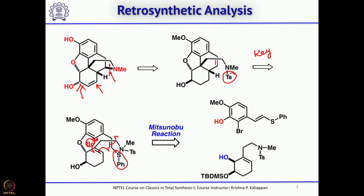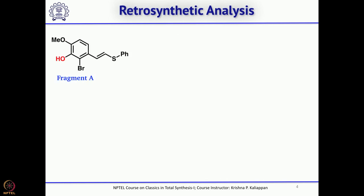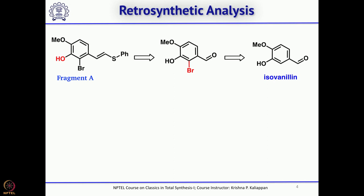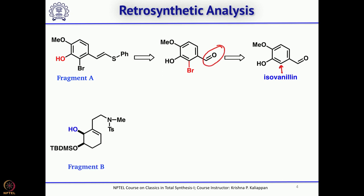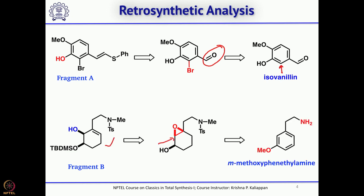This tetracyclic core can be obtained by a simple Mitsunobu reaction on this alcohol, where the corresponding phenol is the nucleophile. Fragment A can be obtained from isovanillin in a few steps where you have to introduce a phenyl group and then homologate the aldehyde. Fragment B can be obtained from this epoxide — if you open the epoxide you get this allylic alcohol, and this can be obtained from metamethoxyphenethylamine using Birch reduction and hydrolysis as key steps.